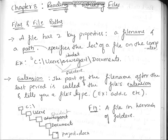For example, if you have a path like C:\users\swigart\documents — here 'users' and 'swigart' are folders under the C drive, and 'documents' is a folder inside that. Every file is followed by an extension.